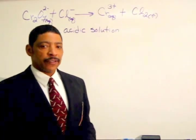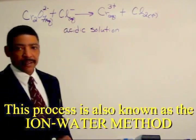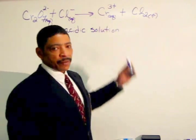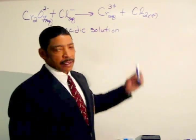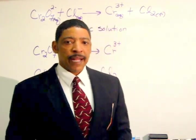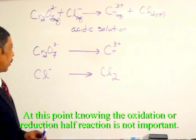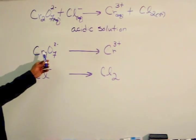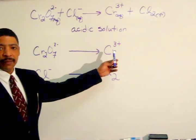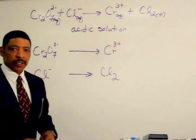In the first example, dichromate ion reacts with chloride ion to produce chromium three-plus ion and chlorine gas. The first step in balancing this reaction is to divide it into two half reactions, where dichromate ion produces chromium three-plus ion, and chloride ion produces chlorine gas.